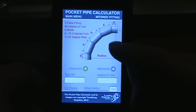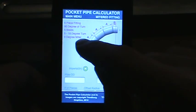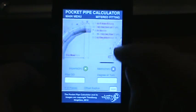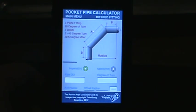There's a five-piece fitting and a six-piece fitting. That just gives you an idea of what the fittings will look like, the information that goes along with it.